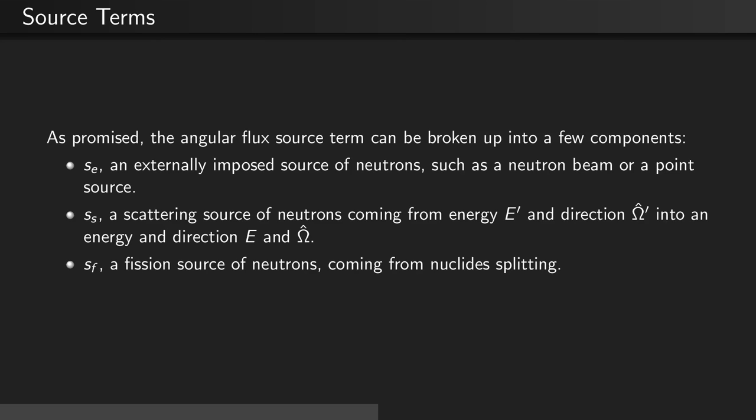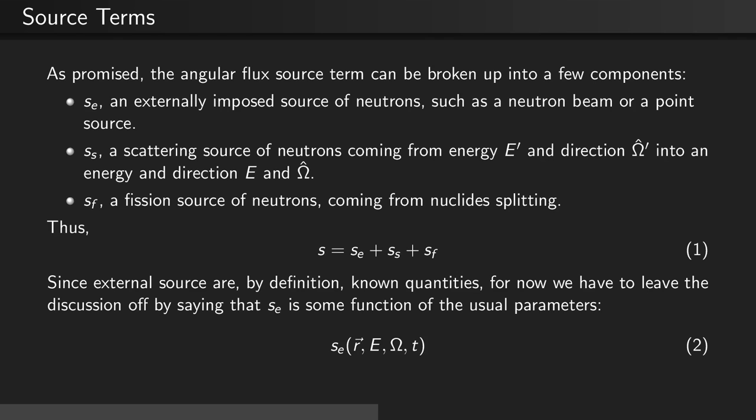As promised, the angular flux source term can be broken up into a few components: S sub E, or an externally imposed source of neutrons such as a neutron beam or point source; S sub S, the scattering source term, representing neutrons coming from an energy E prime in a direction omega hat prime into the target energy E and direction omega hat; and finally, a fission source term, which represents neutrons that are born as a result of another atom splitting. Thus, the total neutron source is equal to the sum of these three neutron sources individually.